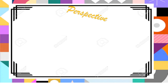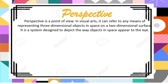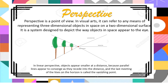Last is perspective. Perspective is a point of view. In the visual arts, it can refer to any means of representing three-dimensional objects in space on two-dimensional surfaces. It is a system designed to depict the way objects in space appear to the eye. In linear perspective, objects appear smaller at a distance because parallel lines appear to converge as they recede, meeting at a point on the horizon called the vanishing point.